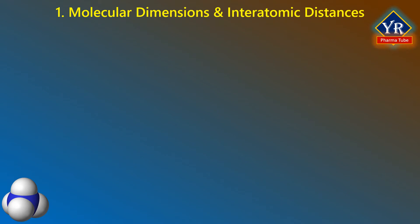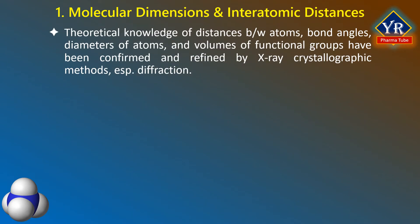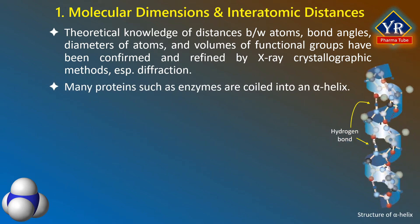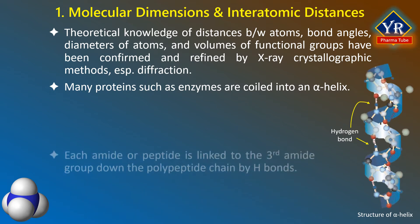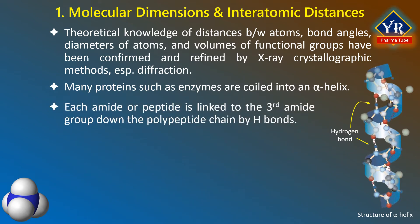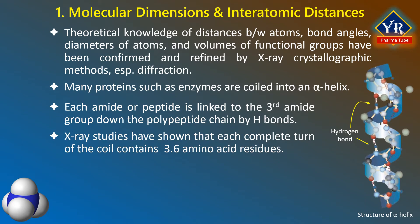Molecular dimensions and interatomic distances. Much of our theoretical knowledge of distances between atoms in molecules, bond angles, diameters of atoms, and even volumes of functional groups have been confirmed and refined by X-ray crystallographic methods, especially X-ray diffraction studies. Many proteins, such as enzymes, are coiled into an alpha helix. Each amide or peptide is linked to the third amide group down the peptide chain by hydrogen bonds. X-ray studies have shown that each complete turn of the coil contains 3.6 amino acid residues.